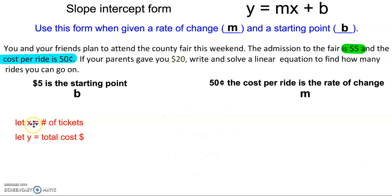We're going to let x be the number of tickets. So in this equation, the x is going to represent how many tickets or how many rides we can go on. And we're going to let y equal the total cost of the fair. So as we look at writing the equation, we know y represents the cost, m represents the slope.